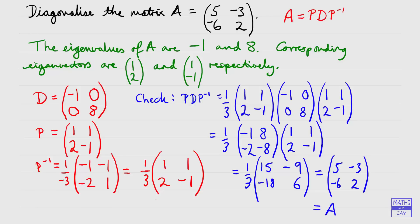Remember the actual hard part is the first step where you need to find the eigenvalues and the eigenvectors. It's really important that once you've chosen how to write your matrix D, your matrix P has got the columns in the same order that you've written the eigenvalues in D. If you had wanted to, you could have written D with eight in the first position and negative one in the lower right-hand corner, but then your matrix P would have had the columns the other way round — first column (1, −1) and second column (1, 2) — and that would be another valid way of diagonalising matrix A.